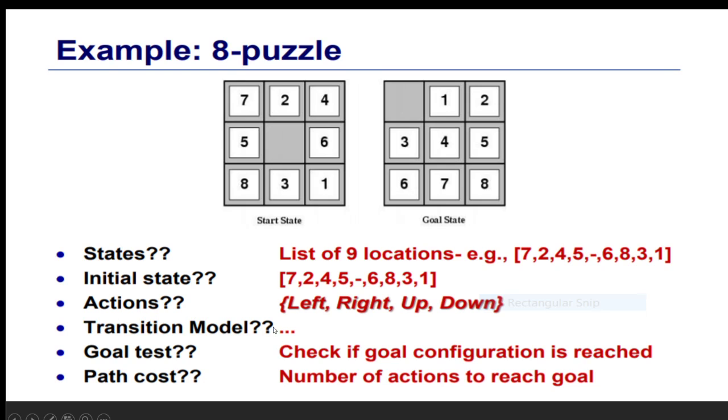You have to explain the initial state, actions, which we call successors in AI. Goal: what you want to achieve. You have to explain the actions to reach that goal.